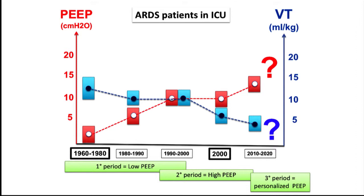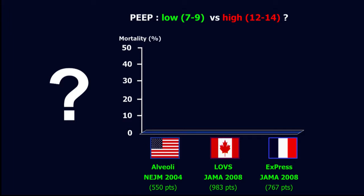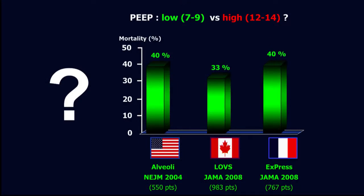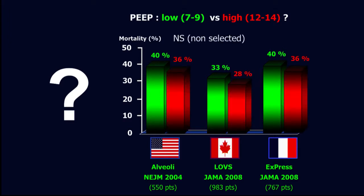To complete what Mathieu said about tidal volume: what is the evidence today about the long discussion about low PEEP — meaning 7 to 9 cmH2O — versus high PEEP — meaning about 12 to 14 cmH2O? This slide summarizes the three main first randomized controlled trials comparing two levels of PEEP, high and low. This is the mortality rate from the French, Canadian, and US studies. Unfortunately, there is a non-significant difference between them. Using high or low PEEP for a non-selected patient is probably not the right approach.